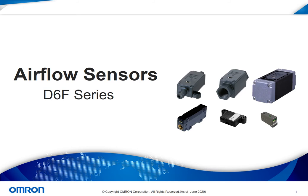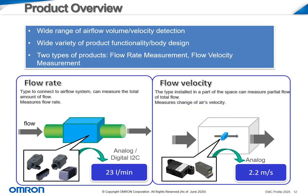OMRON offers a wide variety of unique SKUs within the D6F air flow sensor family. The large number of products offered within the D6F family cover a wide range of air flow volume, air velocity, product functionality, and body design. All of these different products can essentially be broken down into two main types: flow rate measurement and flow velocity measurement. Flow rate measurement sensors connect directly into an air flow system and measure the total amount of flow as it passes through the sensor. These sensors are available in analog or digital I2C output, and the output gives the total flow rate in liters per minute.